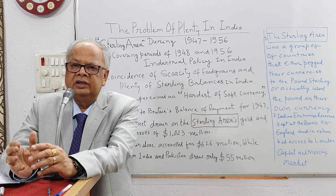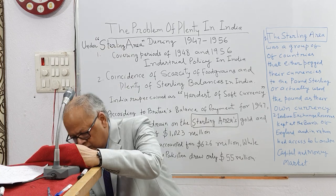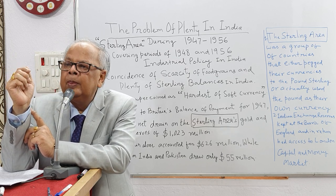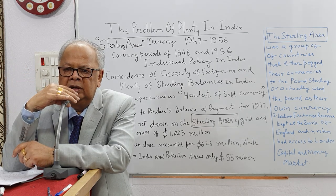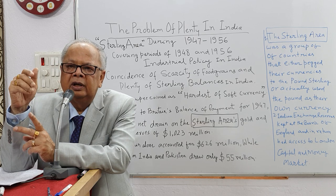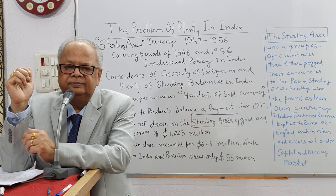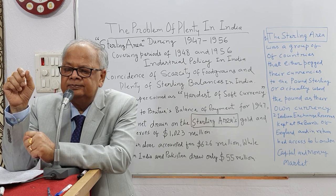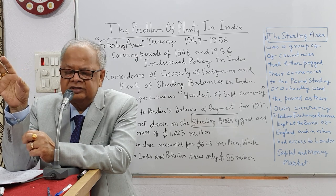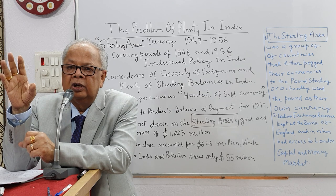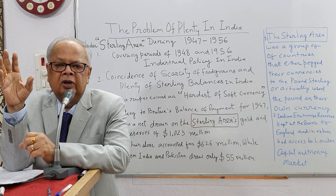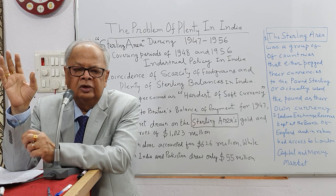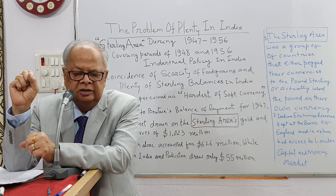We all know that in the world, most countries were under the British Empire. The number one country was the United Kingdom and most of the countries were under the Empire of United Kingdom. In 1776, the USA got independence from England, and there was also the formation of the Commonwealth, in which most of the countries started.